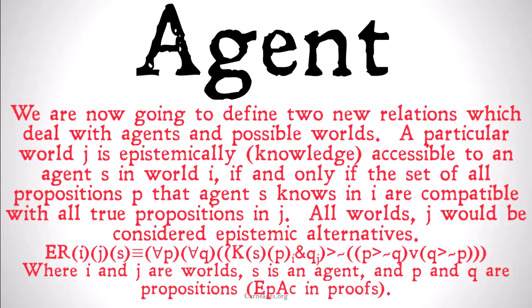All worlds that are like J are going to be considered epistemic alternatives. So the epistemic accessibility relation holds between a world I, a world J, and an agent S, if and only if, for all P and all Q, S knows that P in I and Q is true in J implies that it's not the case that either P implies not Q or Q implies not P. Basically, S's knowledge is consistent with all true propositions of world J, where I and J are worlds, S is an agent, and P and Q are propositions. We'll use this as EPAC in proofs.